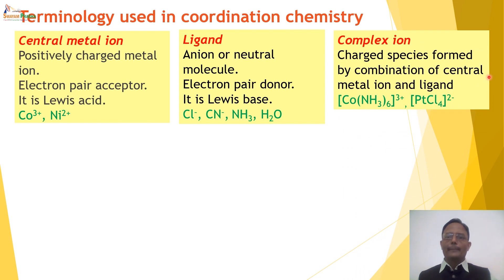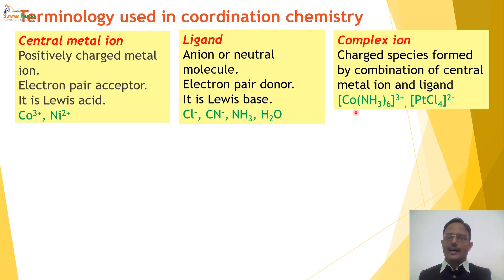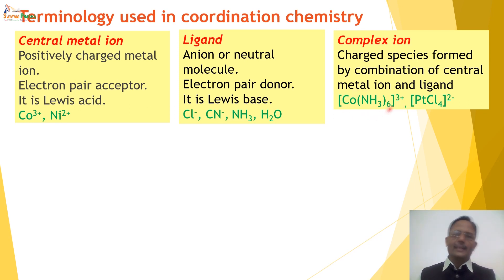The second term is a ligand — generally an ion or a neutral molecule that is an electron pair donor, classified as a Lewis base. Common anionic ligands include Cl⁻, CN⁻, Br⁻, and SO4²⁻. Neutral molecular ligands include NH3 and H2O. The third term is a complex ion — it is a charged species formed by the combination of a central metal ion and ligands. For example, Co³⁺ with 6 ammonia ligands forms [Co(NH3)6]³⁺, which is a complex ion.